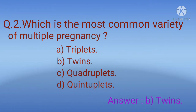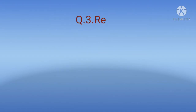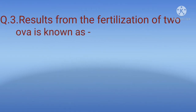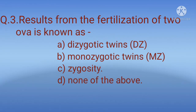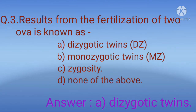The correct option is B, twins. Twin pregnancy is the most common variety of multiple pregnancy. Question 3: Fertilization of two ova is known as? Options: A) Dizygotic twins (DZ), B) Monozygotic twins (MZ), C) Zygosity, D) None of the above. The correct option is A, dizygotic twins.